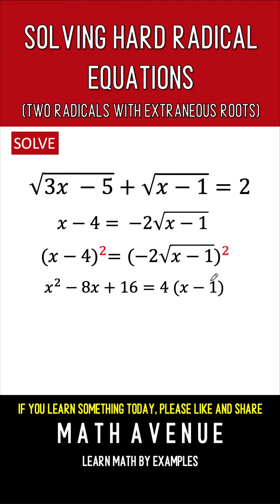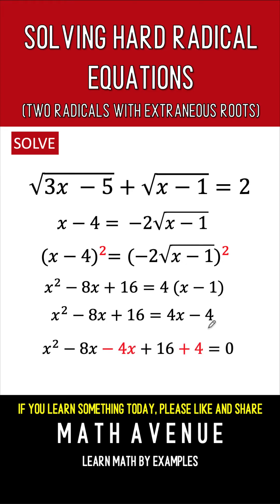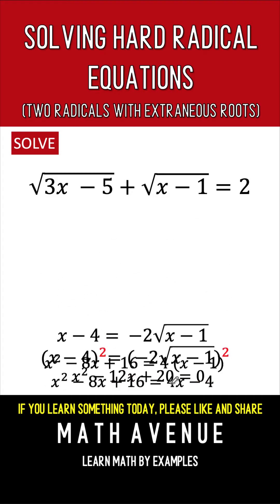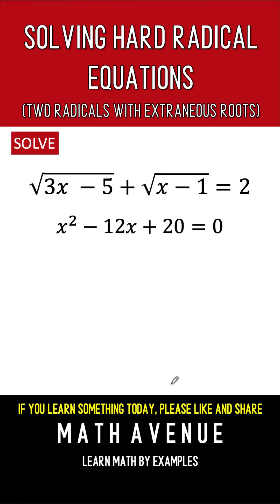We distribute 4 to x minus 1 to get 4x minus 4. Then we gather all like terms to one side since we now have a quadratic equation. The 4x on the right becomes minus 4x on the left; the minus 4 becomes plus 4. Simplifying: x squared, minus 8x minus 4x gives minus 12x, and 16 plus 4 gives 20. We now solve this quadratic equation — notice there are no longer any radicals.